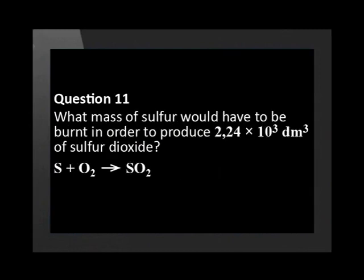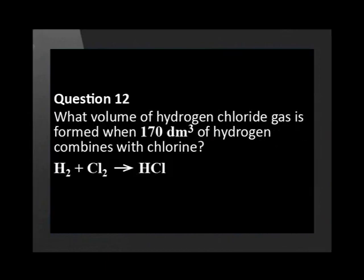What mass of sulfur would have to be burned in order to produce 2.24 times 10 to the 3 decimeters cubed of sulfur dioxide? What volume of hydrogen chloride gas is formed when 170 decimeters cubed of hydrogen combines with chlorine?